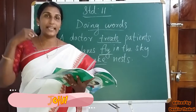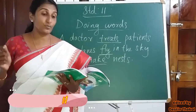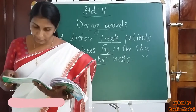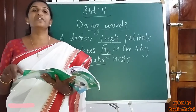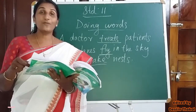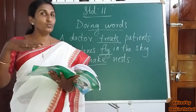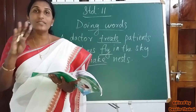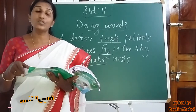Now take your textbook, page number 37, unit number 14 — underline the doing words. For example: fish swim in water. What do fish do? They swim. So 'swim' is the doing word — underline 'swim'.